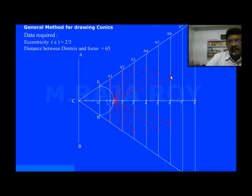If you take the 7th point, it intersects on this CF extended line. That is the other vertex. Now draw a smooth curve joining all these points. Now we have drawn the ellipse.